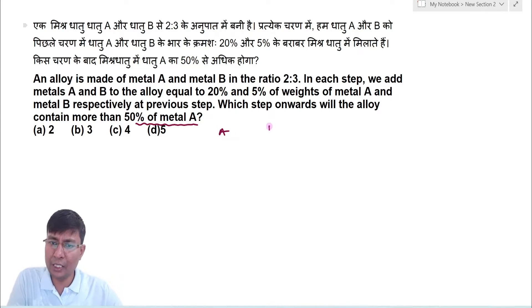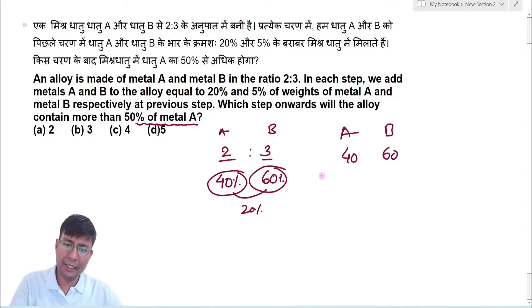Initial ratio - what given A and B is given 2 is to 3. So if I multiply 20 to both ratio, this is 40 and this is 60. That implies this is 40% and this is 60%. Initially A and B quantity which was 40 and 60. Now in the first step what you will do is add A 20%.